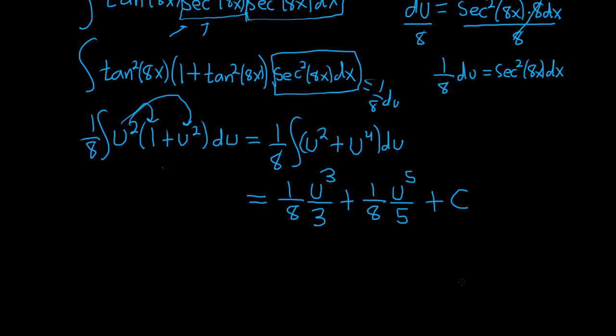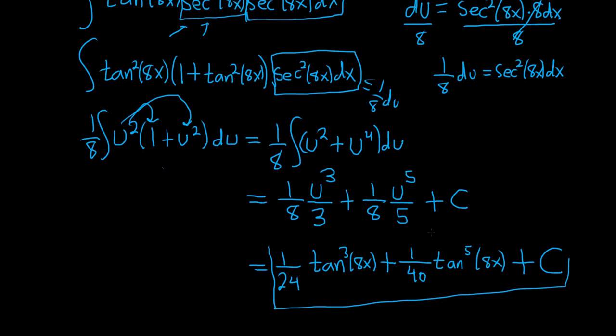Everything looks okay. So this is going to be 1 over 24. 3 times 8 is 24. Our u was tangent of 8x. This is tangent cubed of 8x plus, 8 times 5 is 40, so this is 1 over 40. Tangent to the 5th power of 8x. And let's not forget our constant of integration, capital C. That would be the final answer.